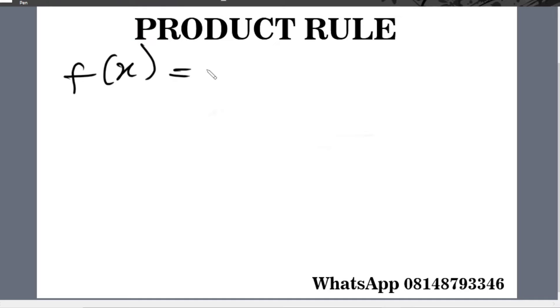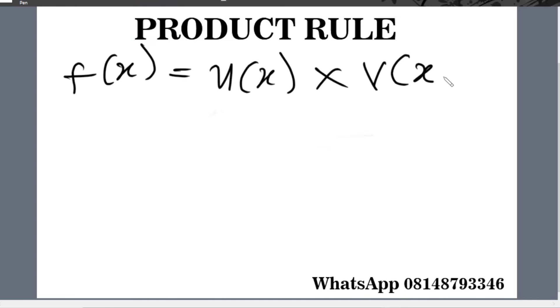So what is a product? A product is the result of multiplication. When you multiply two terms, it gives you an answer — the product of the multiplication that was carried out. So f of x equals u of x multiplied by v of x.